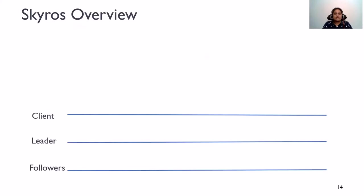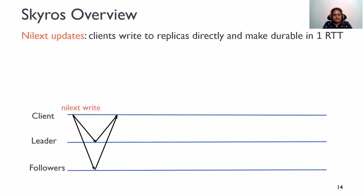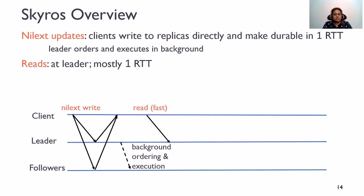Now, let's take a look at how Skyros processes different requests. Clients send nilext updates directly to the replicas and make them durable in one round trip. The leader then orders and executes these updates in the background. Reads go to the leader, and if there are no pending updates to the object being read, the leader returns the result of the read immediately, thus completing the read in one round trip.